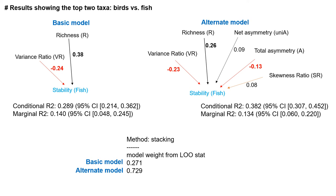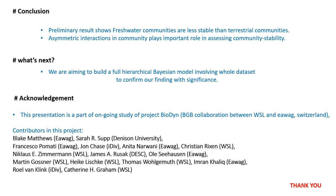In conclusion, preliminary results show that freshwater communities are less stable than terrestrial communities, and asymmetric interactions in communities play an important role in assessing community stability. We are aiming to build a full hierarchical Bayesian model involving the whole dataset to confirm our findings with significance. Thank you for your attention.